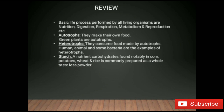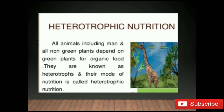In your previous lecture you learned about starch, a carbohydrate nutrient found notably in corn, potatoes, sweet potato, and rice, and commonly prepared as a white tasteless powder. Today I will tell you about heterotrophic nutrition in humans. All animals including humans, and all non-green plants, depend on green plants for organic food — they are known as heterotrophs and their mode of nutrition is called heterotrophic nutrition.